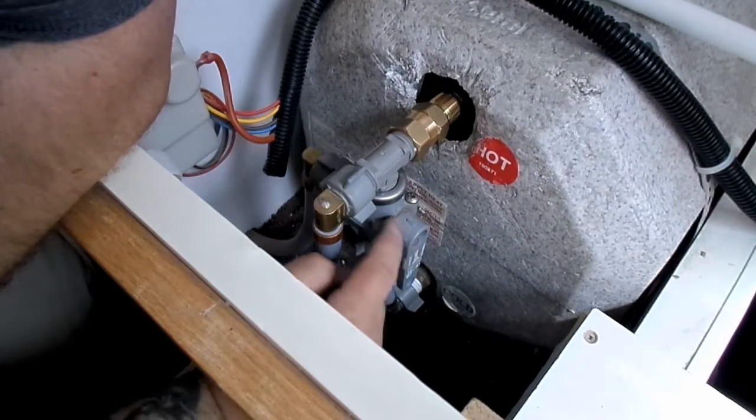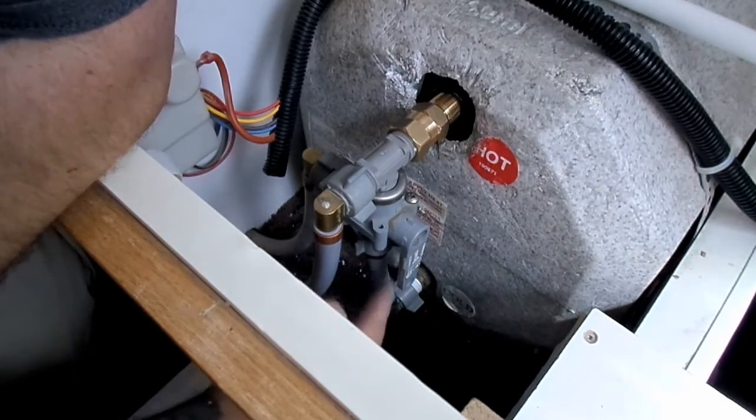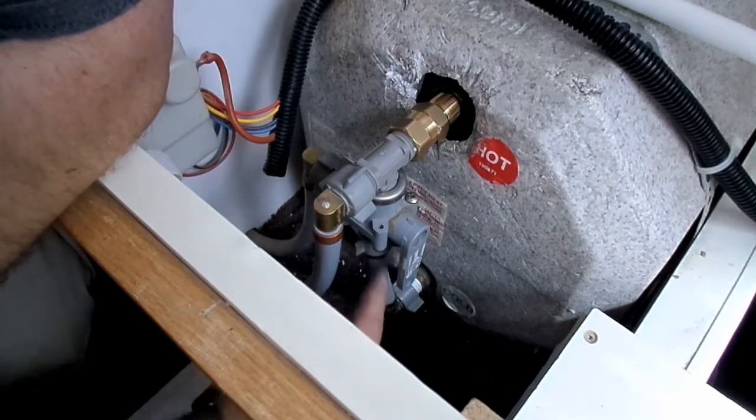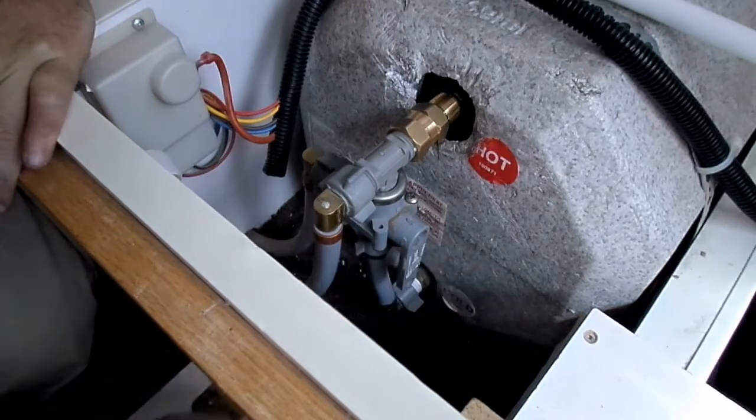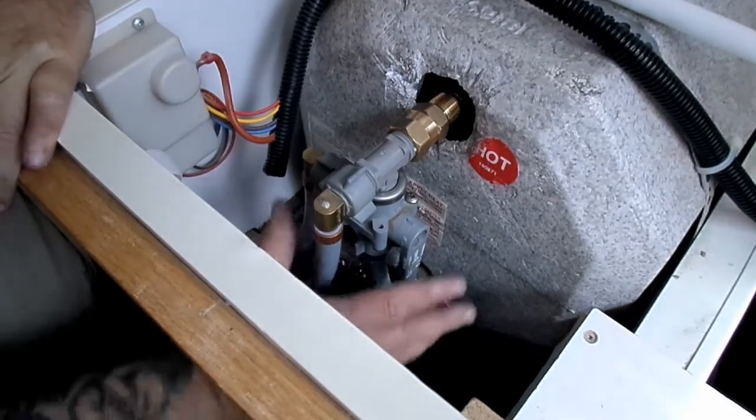Anyways, it started leaking right here at this valve - just dripping, one drip per two seconds when it was under pressure. So I'm replacing this valve and I'm going to show you what I made to replace this whole unit here.